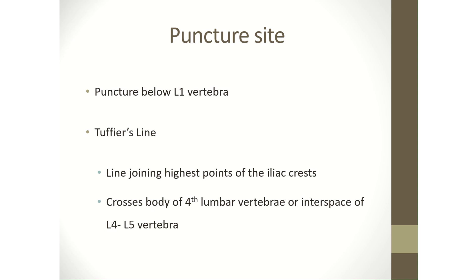Once the position has been obtained, the puncture site has to be discerned. The puncture has to be done below the level of L1 vertebra because the spinal cord ends at this level. An imaginary line called the Satovius line is drawn joining the highest points of the iliac crest, and this line passes through the spinous process of L4 vertebra. The interspace above or below it, which is L3-L4 or L4-L5, is chosen for performing the lumbar puncture.